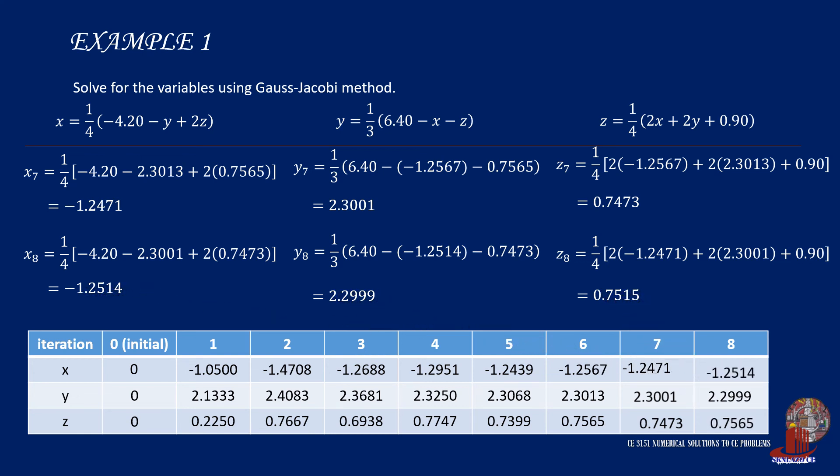Although the values have not yet converged completely, we can conclude that at this point the values are: x is approximately negative 1.25, y is approximately 2.3, and z is approximately 0.75.